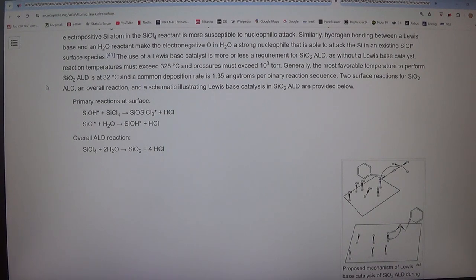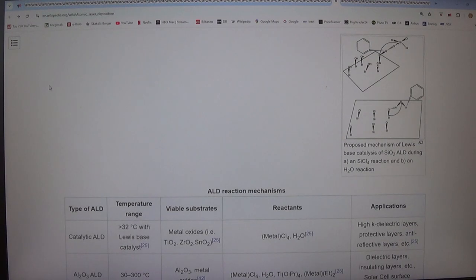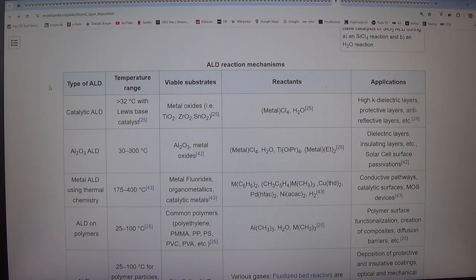Two surface reactions for SiO2 ALD and overall reaction are provided. Primary reactions at surface: Si-OH asterisk and SiCl4 shows Si-Cl3 asterisk plus HCl. Si-Cl asterisk and H2O yields Si-OH asterisk plus HCl. Overall ALD reaction: SiCl4 plus 2H2O yields SiO2 plus 4HCl. Catalytic ALD operates at 32 degrees C with Lewis base catalyst on metal oxides using metal Cl4 and H2O for high-K dielectric layers, protective layers, anti-reflective layers, etc.